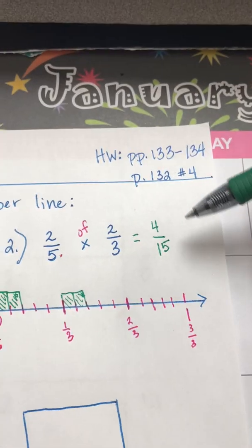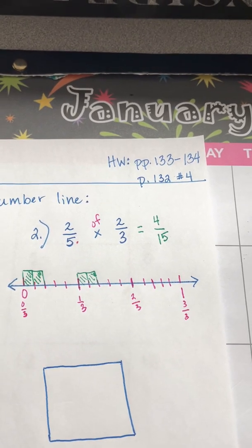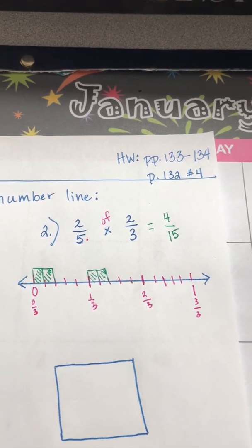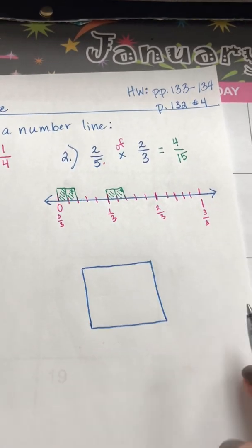We're going to check to see if we can simplify — and we cannot. So four-fifteenths is our final answer.